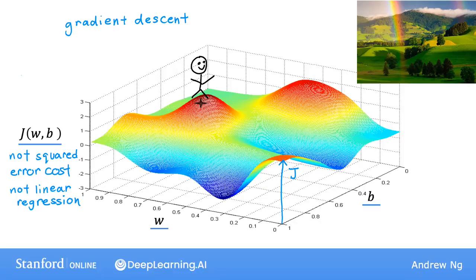Where the high points are hills and the low points are valleys. I'd like you to imagine, if you will, that you're physically standing at this point on the hill. And if it helps you to relax, imagine that this has really nice green grass and butterflies and flowers, a really nice hill. And your goal is to start up here and get to the bottom of one of these valleys as efficiently as possible.